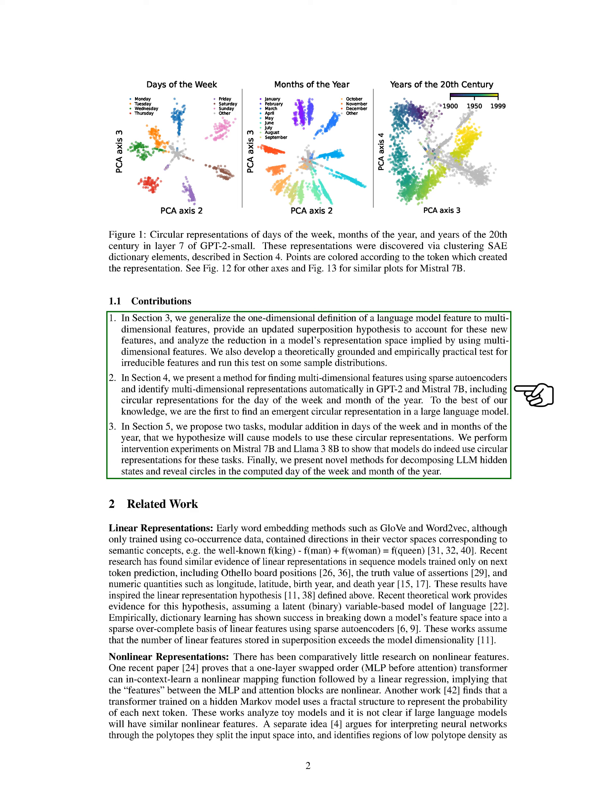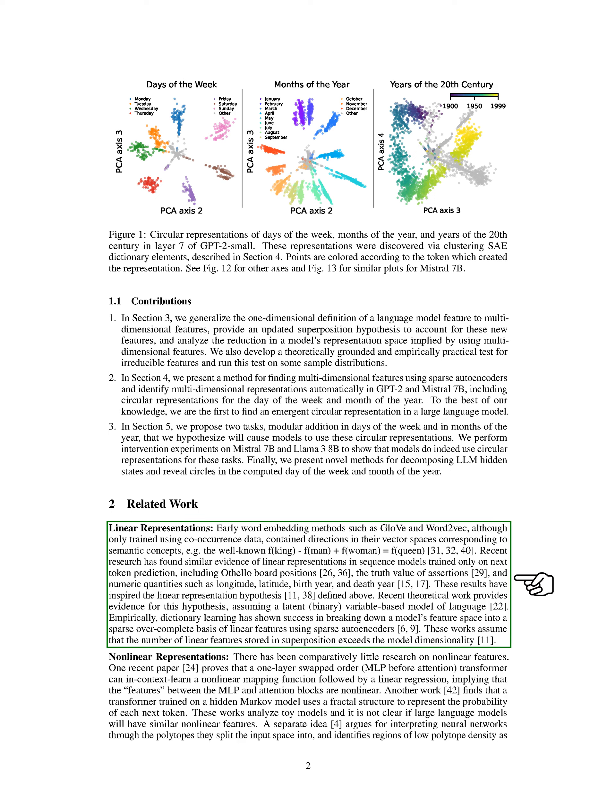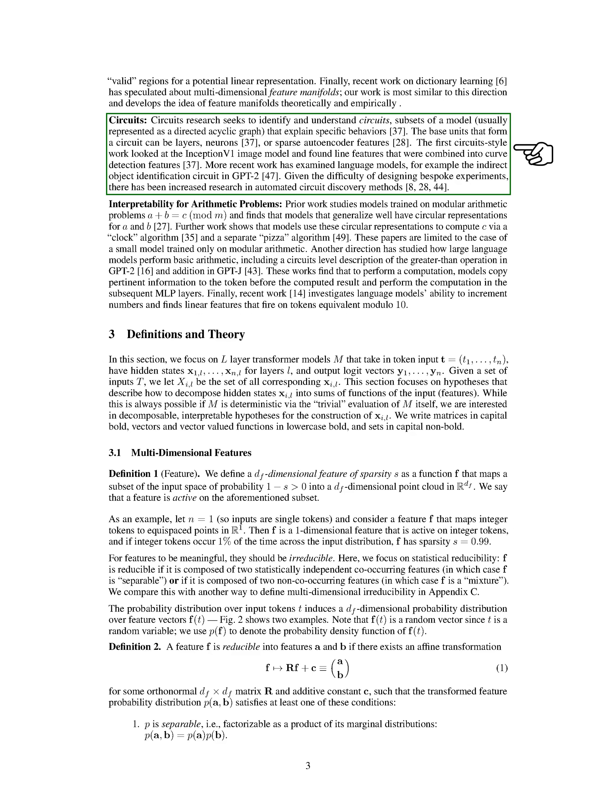Additionally, we develop new techniques to break down LLM hidden states and reveal circular patterns in the day of the week and month of the year. Our work builds on previous research on linear representations in word embedding methods like GloVe and Word2Vec. We also explore evidence of linear representations in sequence models trained for next token prediction. Furthermore, we investigate the presence of nonlinear features in models, such as the use of fractal structures and polytopes. We delve into the study of circuits within models to understand specific behaviors, such as the identification of indirect objects in GPT-2.